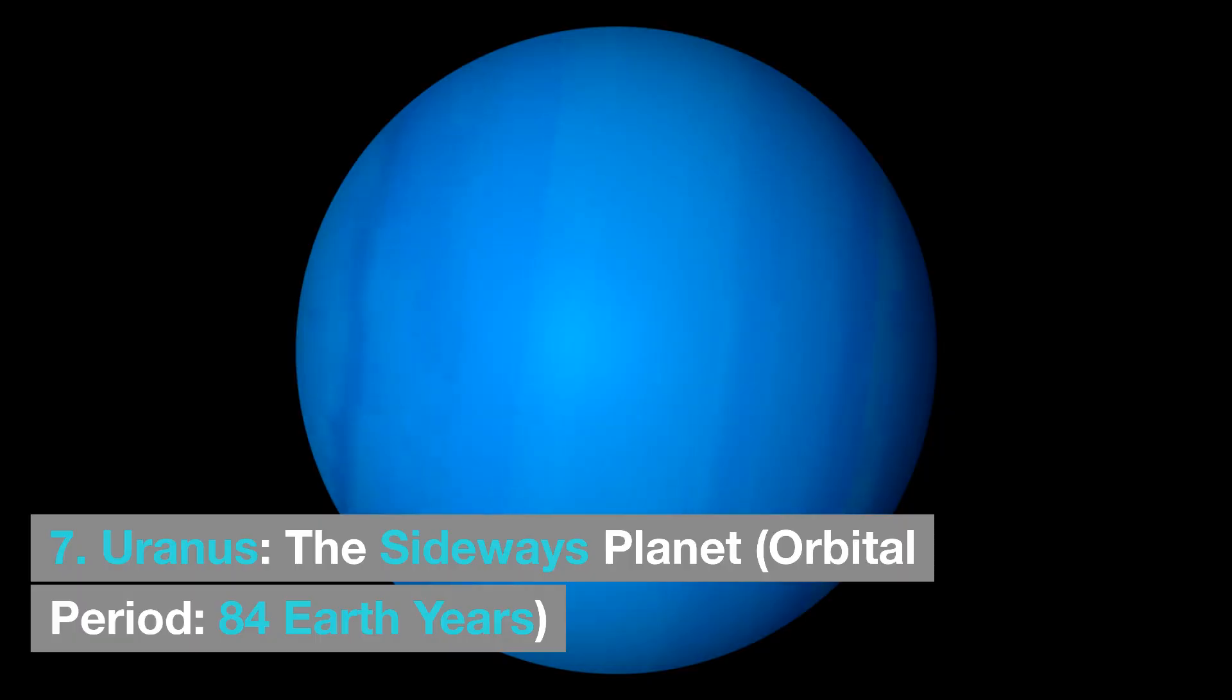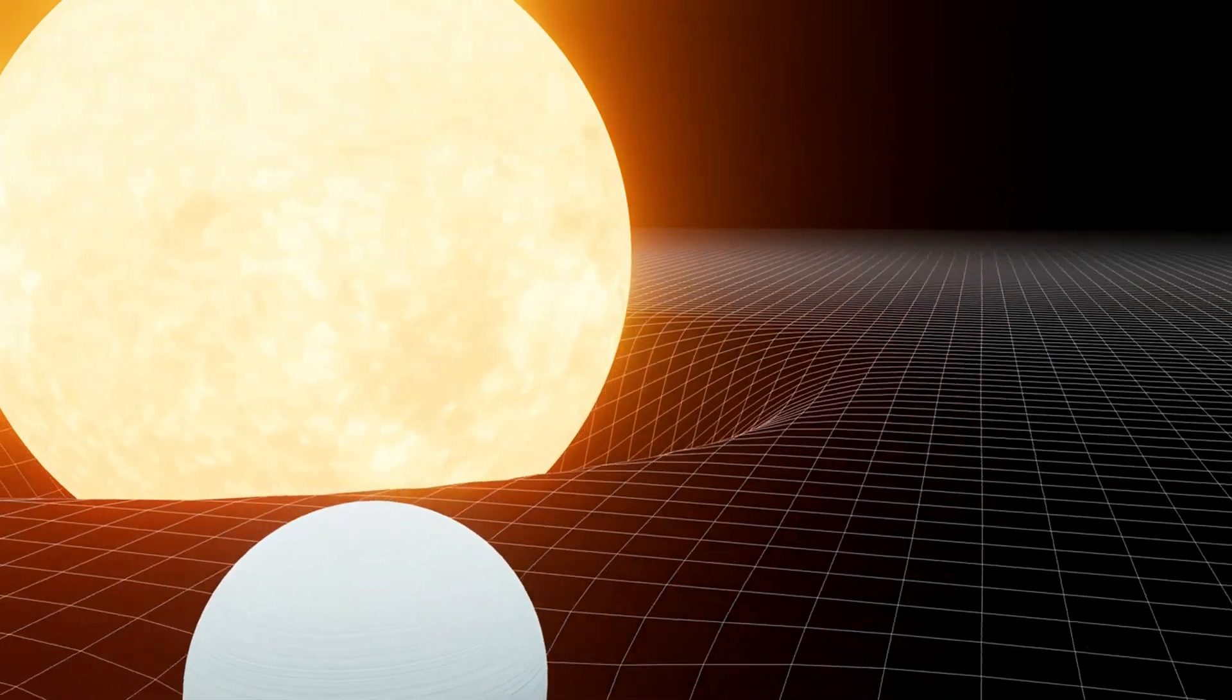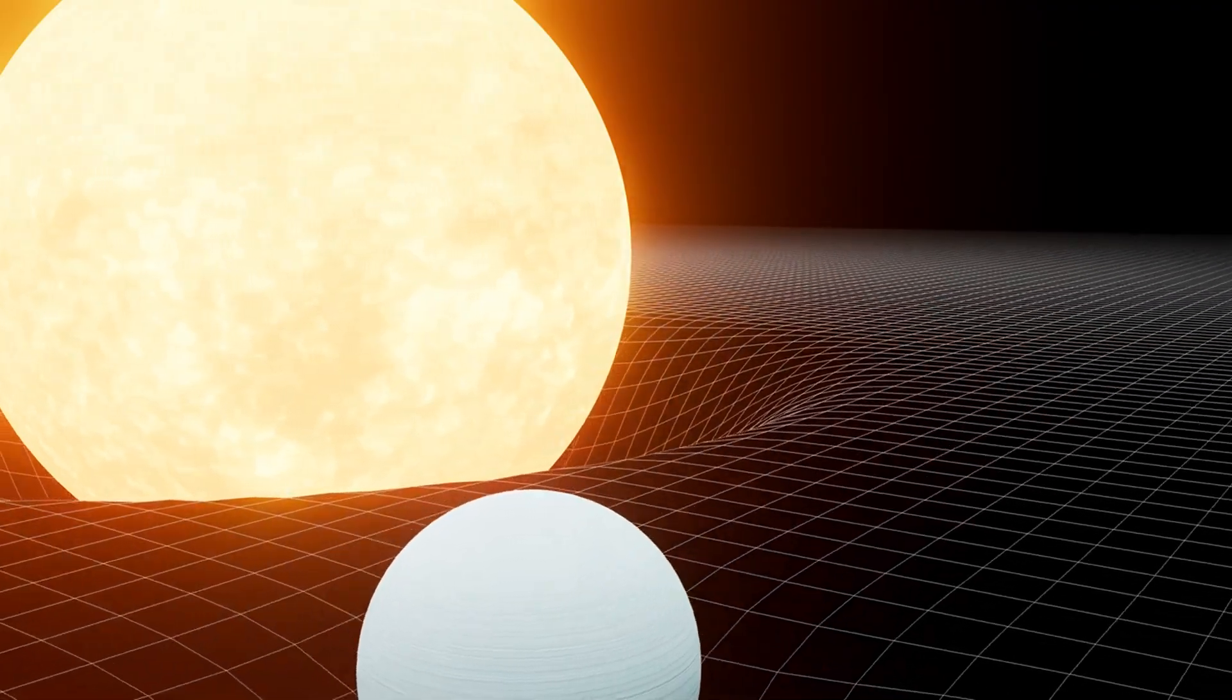Uranus, the sideways planet, orbital period 84 Earth years. Known for its unusual sideways rotation, Uranus takes 84 Earth years to complete one orbit of the sun.